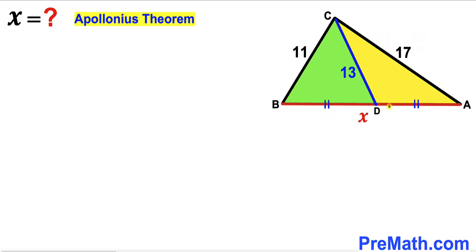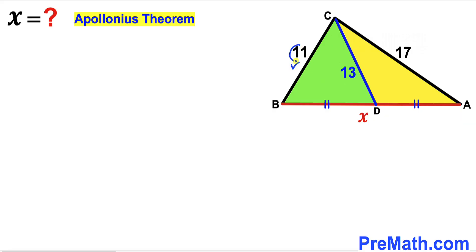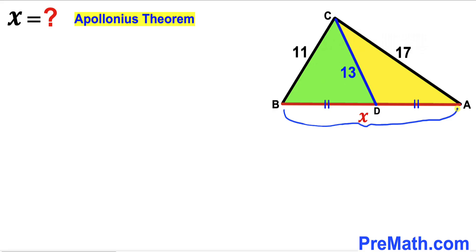Welcome to PreMath. In this video we have triangle ABC along with median CD, such that segment BD equals segment AD. Side BC is 11 units, side AC is 17 units, the median CD is 13 units, and the whole side AB is X. Our task is to calculate the value of X.